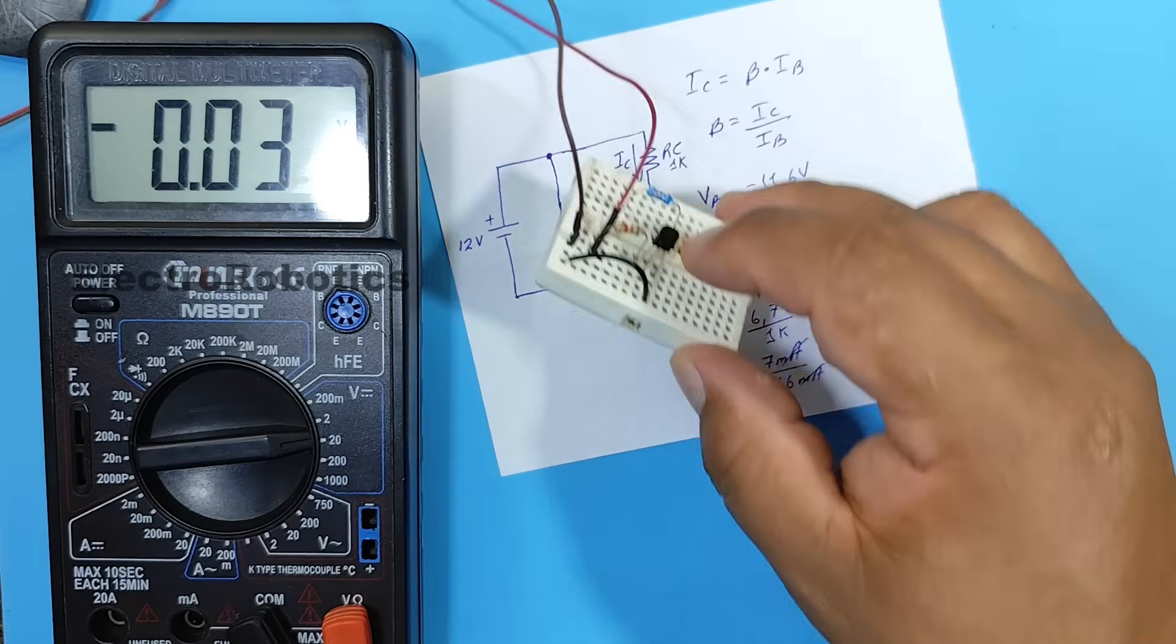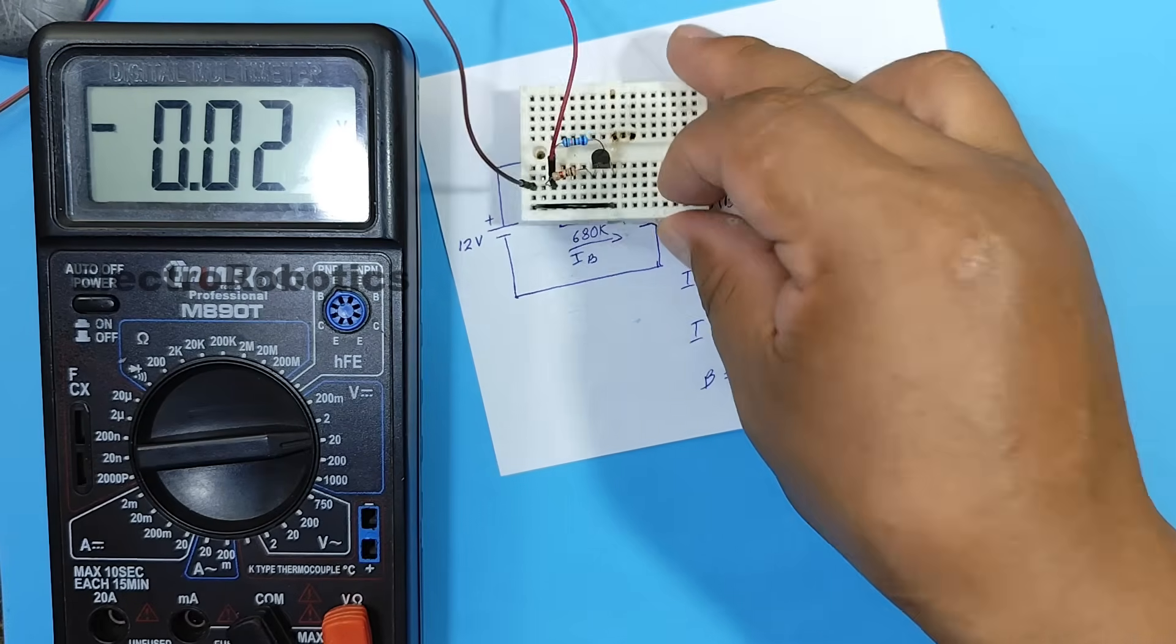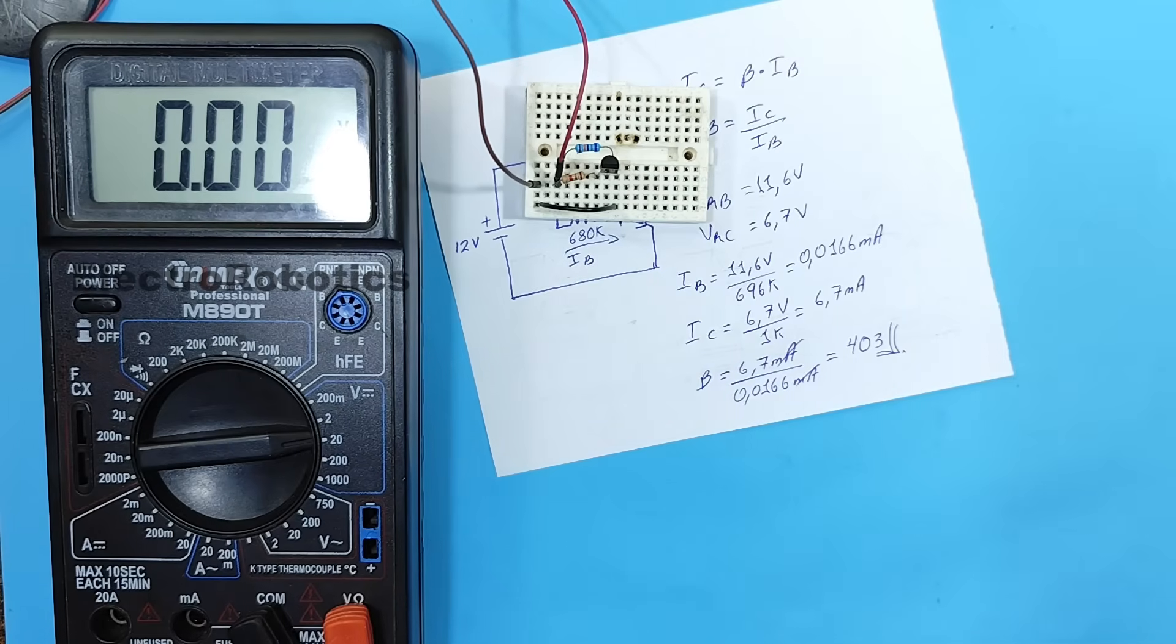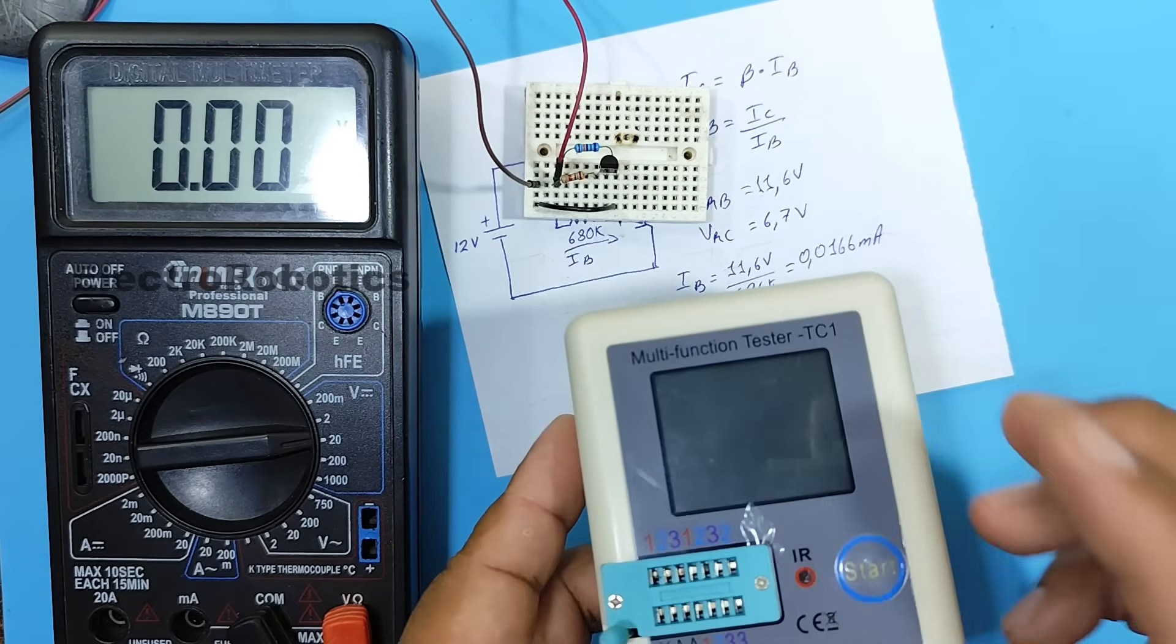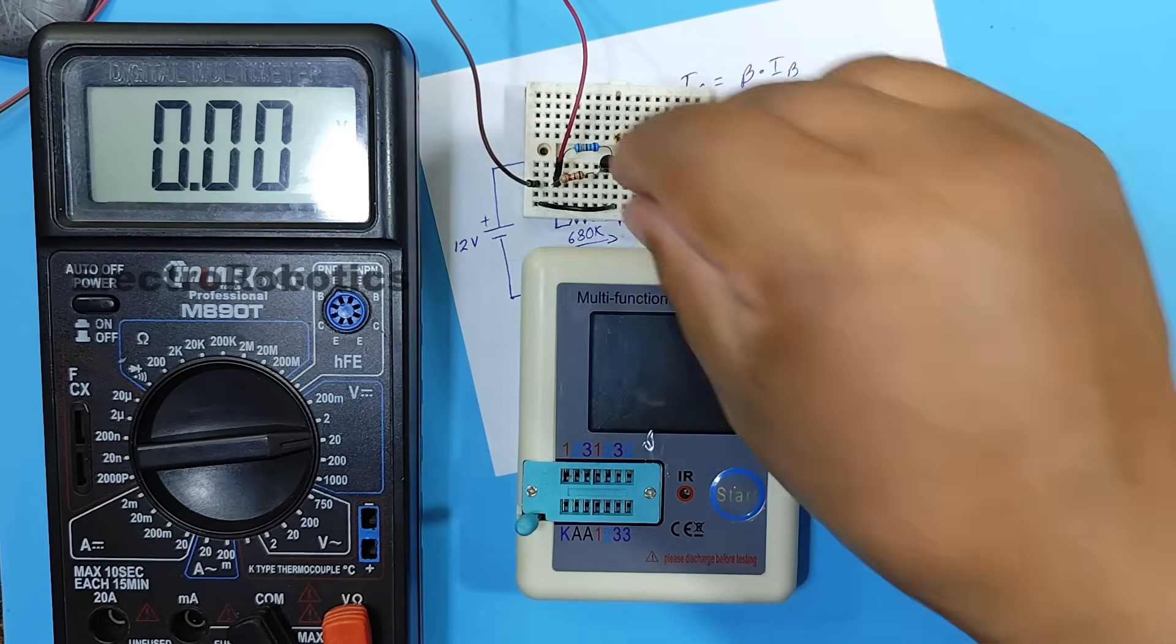Therefore, that would be the gain of our BC547. However, this needs to be confirmed with other instruments. Let's confirm it with this instrument and see if they are the same.